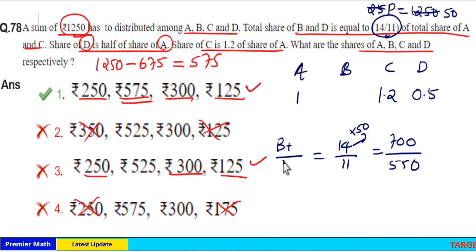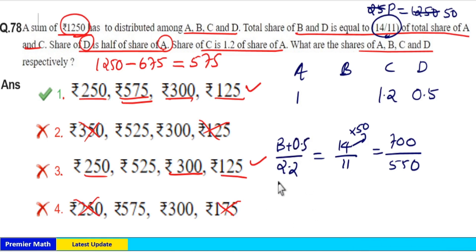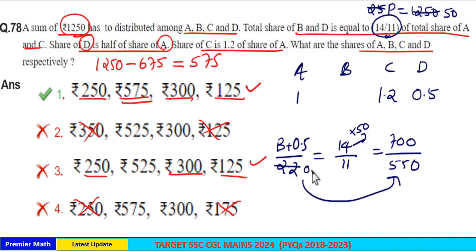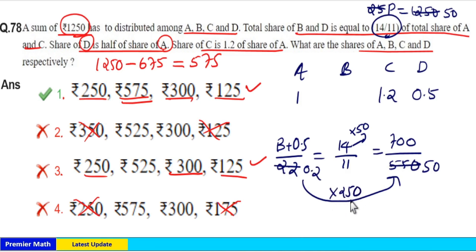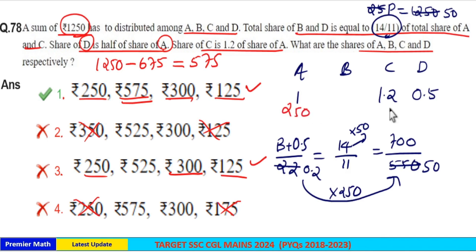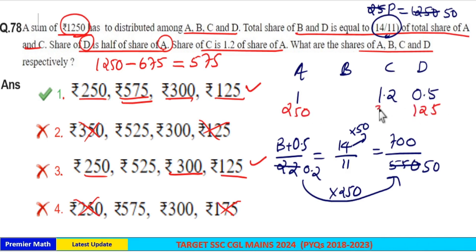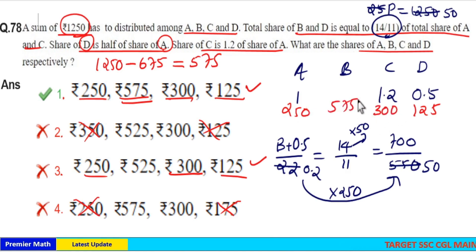Since a + c is 2.2 and that equals 550 (11 parts), we get 1 part = 550 / 2.2 = 250. So a equals 250, d equals 125, and c equals 1.2 × 250 = 300. Therefore b equals 1250 − 250 − 300 − 125 = 575.